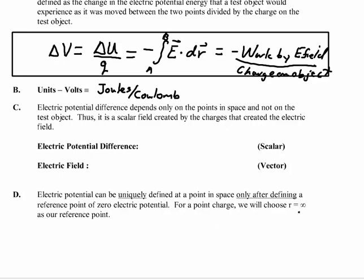For point charges, we'll choose this reference point at infinity. That's because it simplifies the way the math and the formula looks. But we could have arbitrarily chosen any point location that we wanted for a reference point. Alright, I'll continue this lecture on electric potential in the next video.